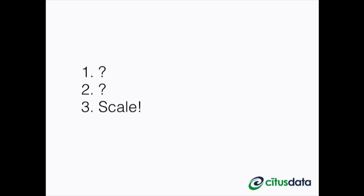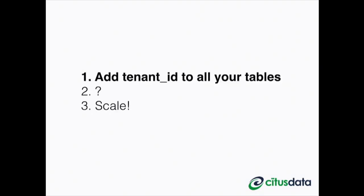The goal when scaling a multi-tenant database is to grow compute, storage, and RAM beyond a single node. The first thing you typically have to do is add the tenant ID to all your tables. In a relational database, many tables need to traverse multiple levels to find which tenant they belong to, so an important first step is adding tenant ID into every table so you can efficiently group data together.